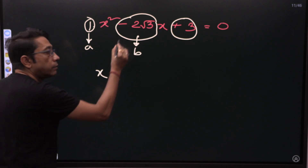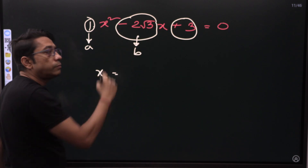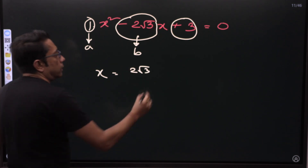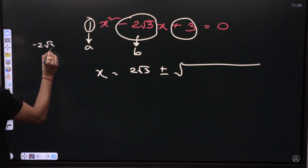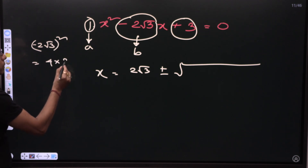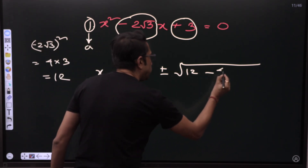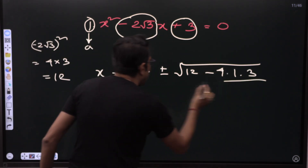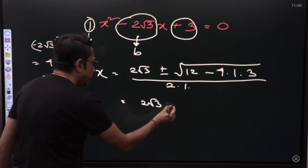Now putting the values: minus B means minus of minus 2 root 3, which is just 2 root 3. Plus or minus root of B squared — that is, minus 2 root 3 whole squared gives 4 times 3 equals 12. So B squared becomes 12. Minus 4 into A, which is 1, into C, which is plus 3. Divided by 2 into A, which is 1. So we get 2 root 3 plus or minus root of 12 minus 12.